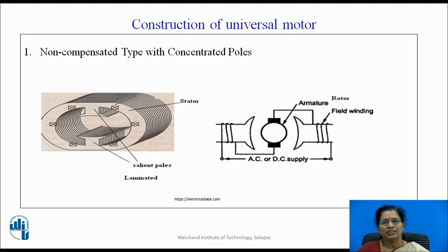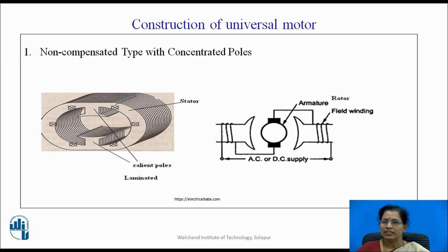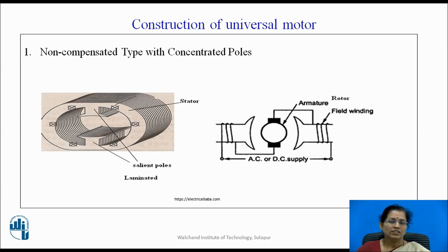In the second diagram you can see the armature — that is nothing but the rotor — and the armature winding and the field winding are connected in series. The construction is the same as the series DC motor.